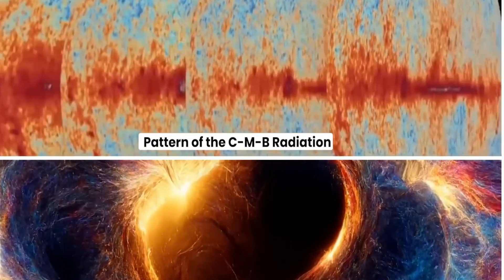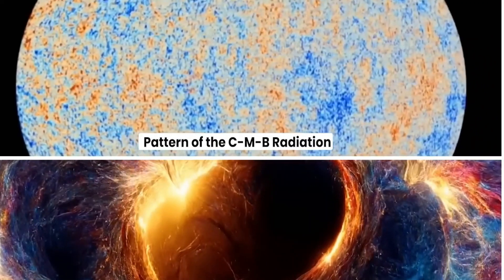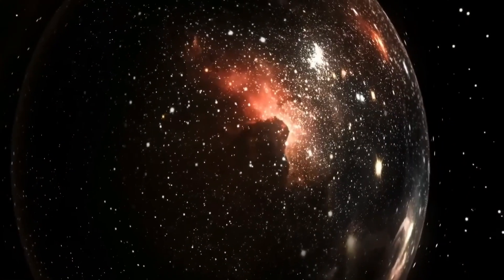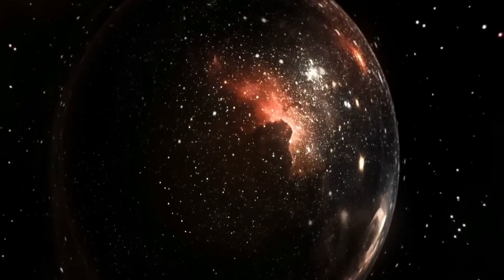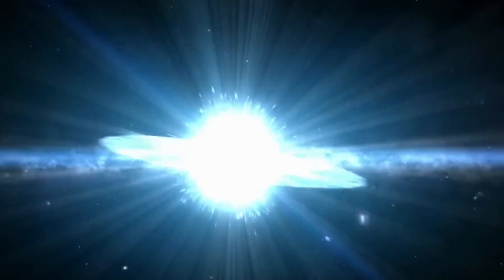For galaxies to form so quickly and reach such sizes, they would need to convert all available gas into stars, a process with a 100% conversion rate. Yet, this high rate is improbable, as galaxies typically convert no more than 10% of gas into stars.